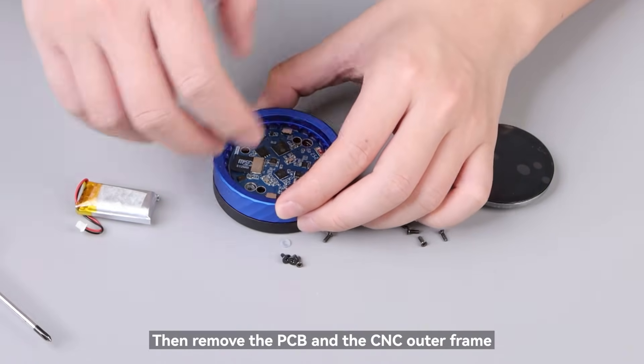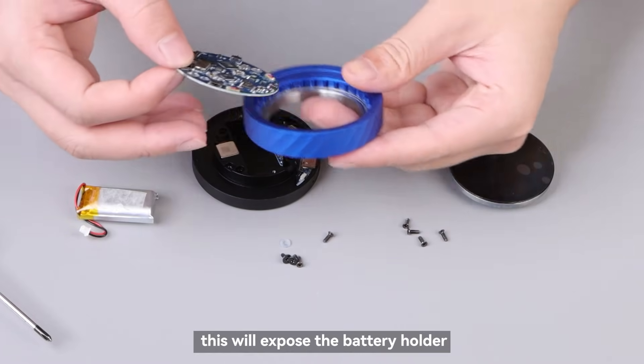Then remove the PCB and the CNC outer frame. This will expose the battery holder.